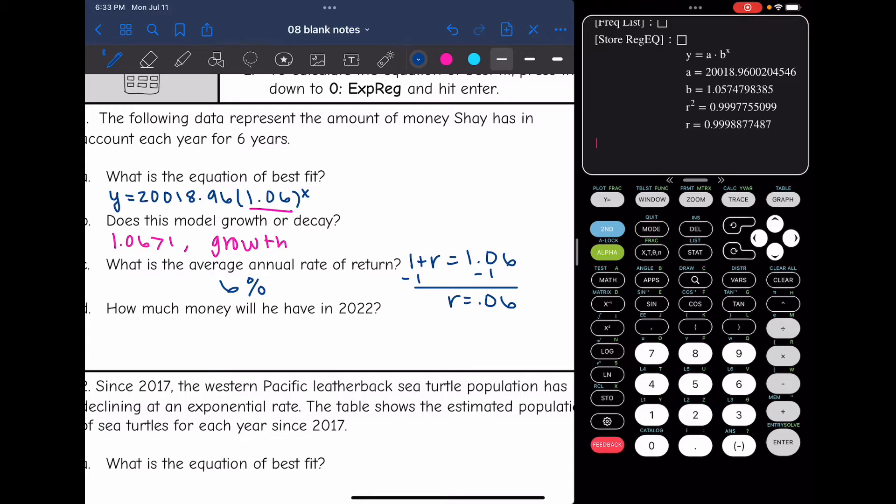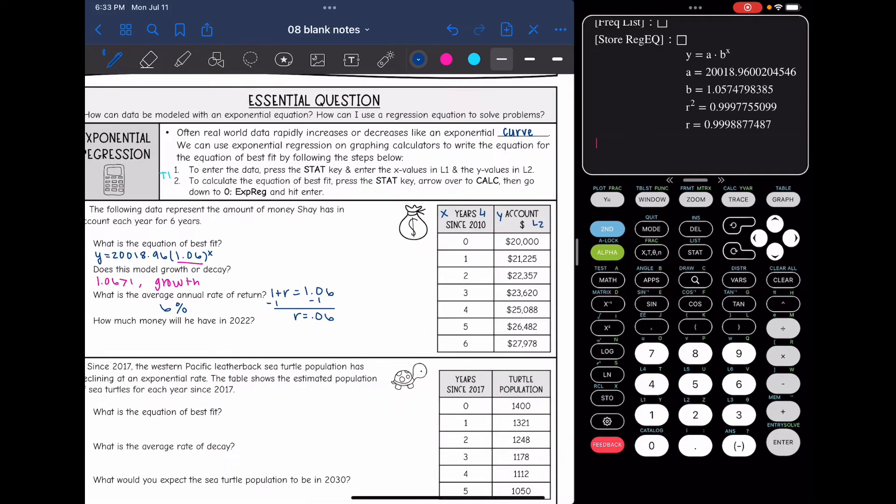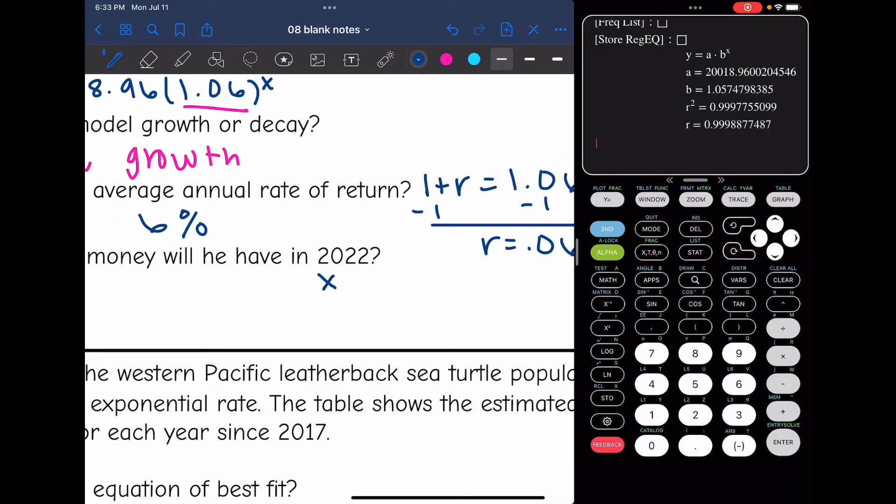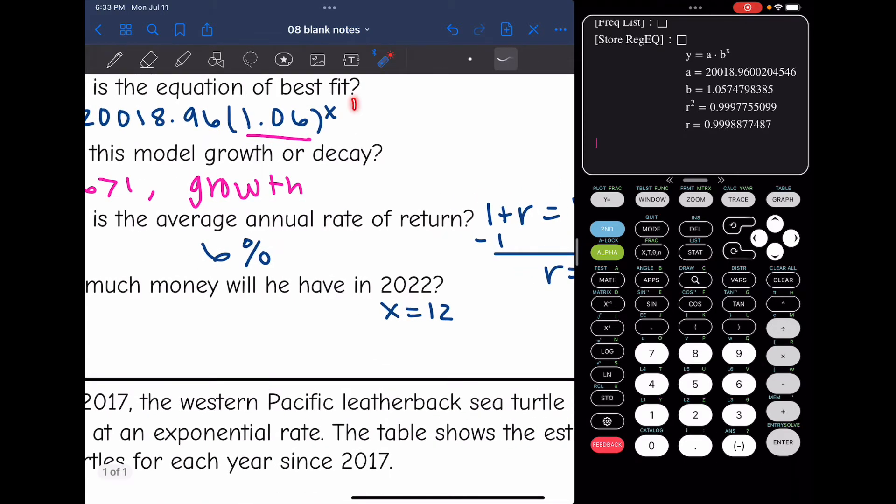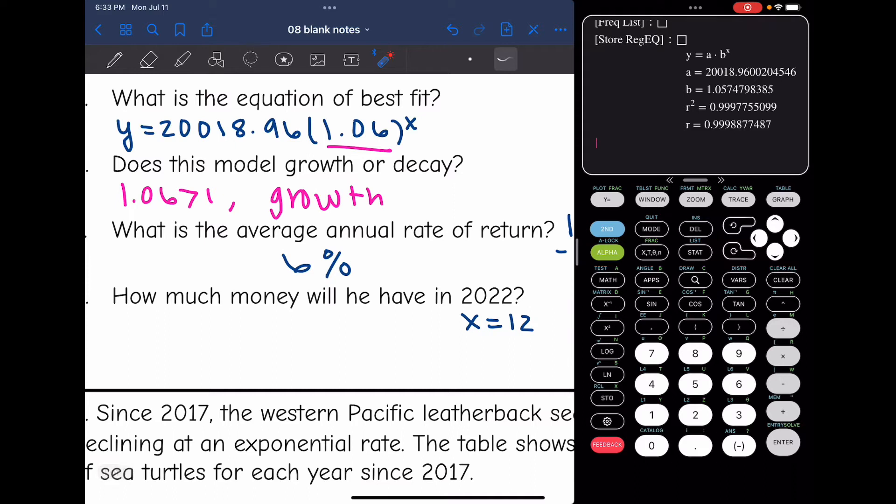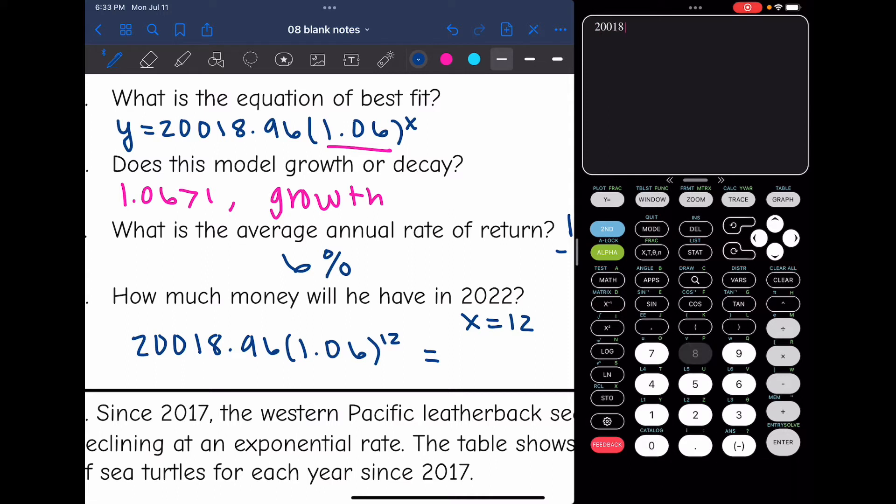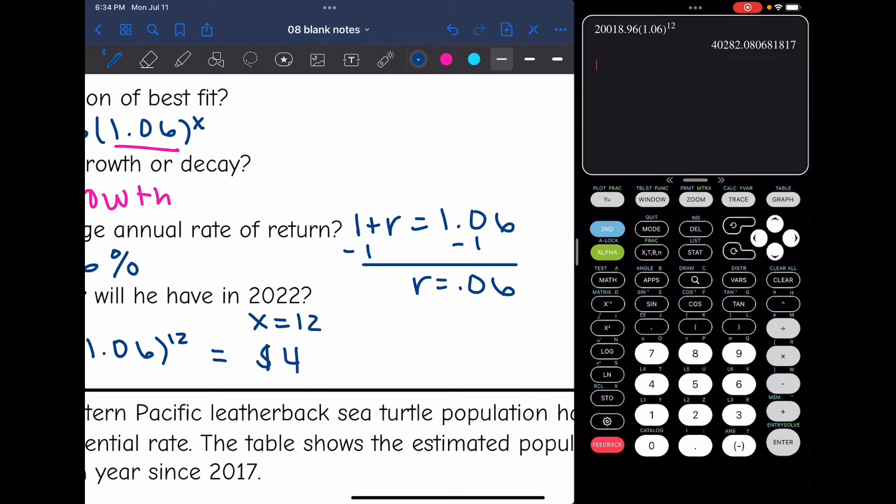Then it says, how much money will he have in 2022? The table was years since 2010. And 2022 is 12 years after 2010. So I'm going to substitute in 12 for X in this function. So I will do 20,018.96 times 1.06 to the 12th to tell me how much money he'll have. So 20,018.96 times 1.06 to the 12th is $40,282.08.